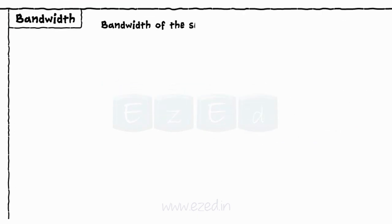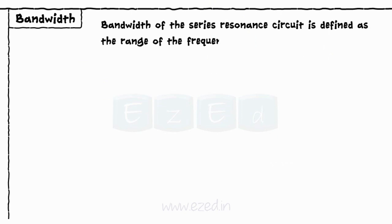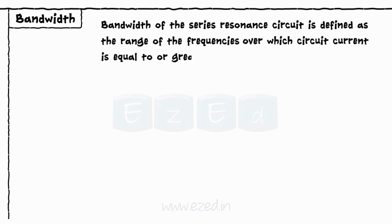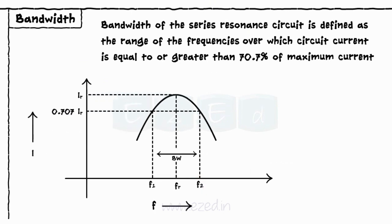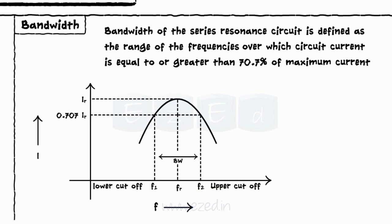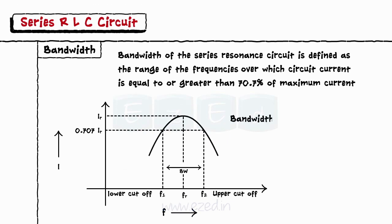The bandwidth of the series resonant circuit is defined as the range of frequency over which the circuit current is equal to or greater than 70.7% of the maximum current. F2 is called the upper cutoff frequency and F1 is called the lower cutoff frequency. Thus, the bandwidth is the difference between the upper cutoff and the lower cutoff frequency.